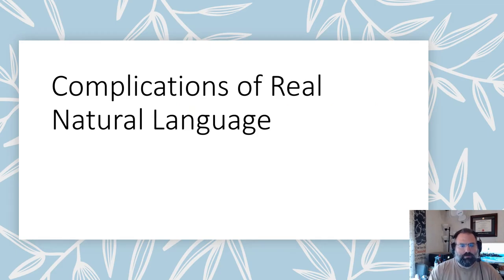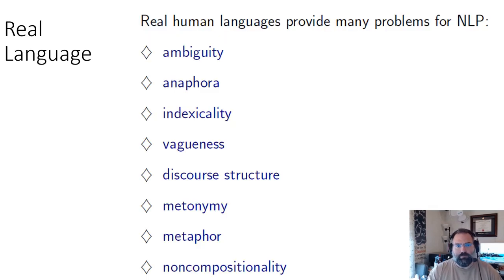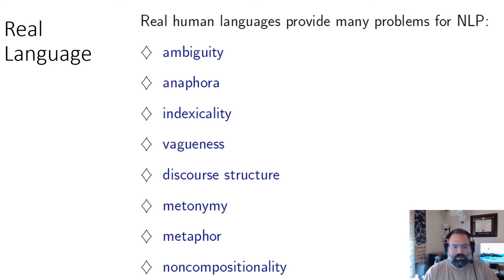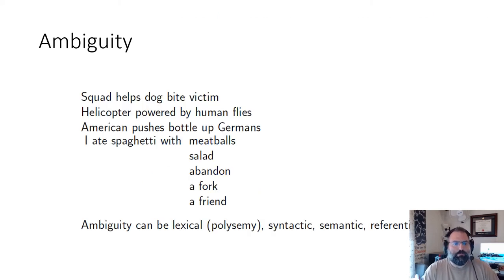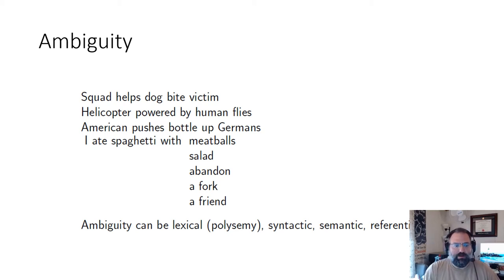Drilling into the complexities associated with natural language processing: real human language is very challenging for programs to process. Here's a list of problems. Moving into ambiguity: 'the squad helps dog bite victims' — are they helping the dog bite the victim, or helping the person who was bitten? Things can be very ambiguous. Consider 'I ate spaghetti with meatballs' versus 'I ate spaghetti with salad' — it changes from a dish that includes the ingredients to two different dishes served at the same time.